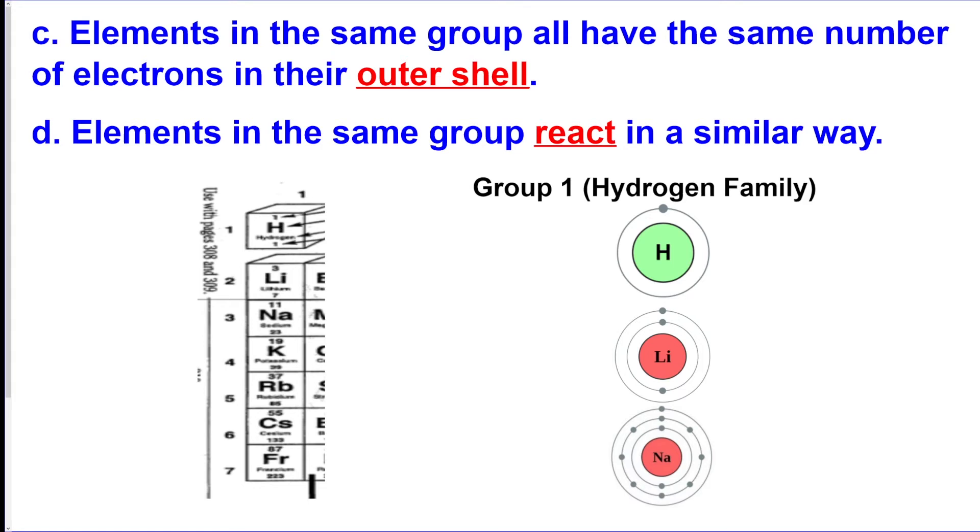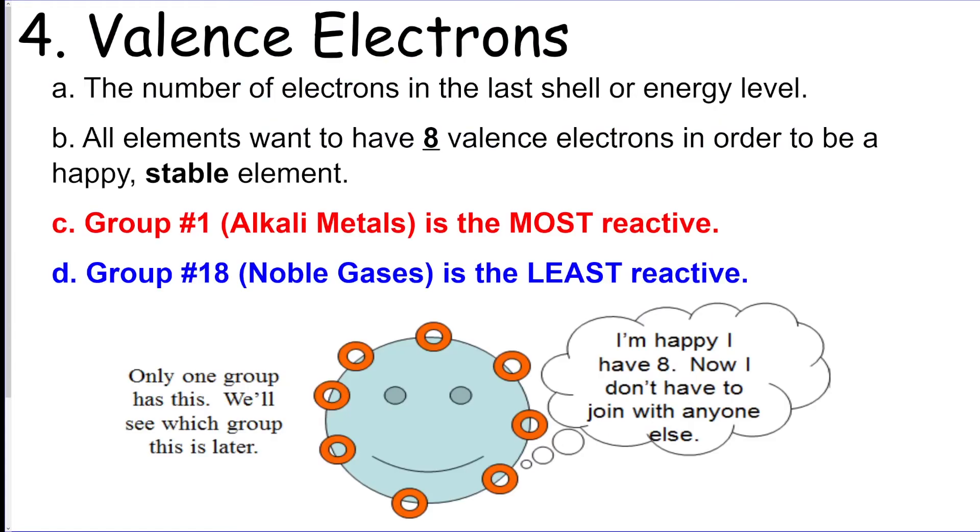All atoms want to have eight valence electrons in order to get stable. So group one, for example, since they only have one valence electron, they're very unstable so they react a lot. And then group 18 has eight valence electrons, so they're the least reactive and the most stable.